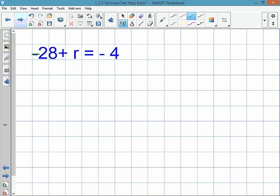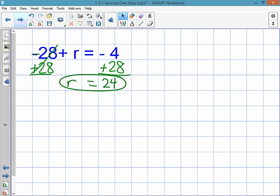In this problem, negative 28, the way you get rid of it is to add 28. And you do that to both sides because what you do on one side, you do on the other side. Those two cancel. r equals negative 4 plus 28 is positive 24. Okay, so those are basic examples of addition and subtraction.